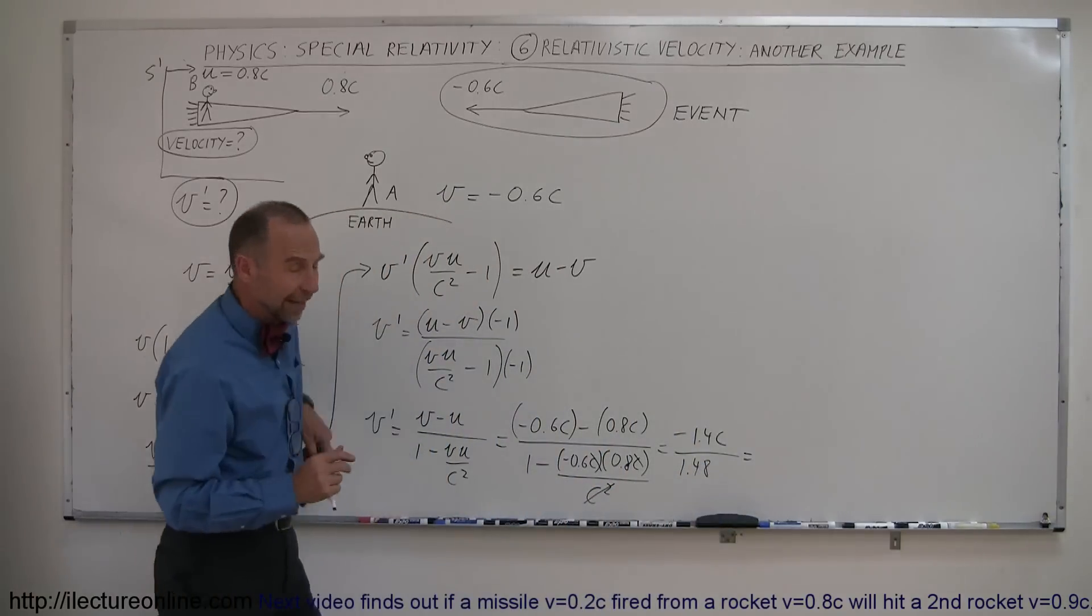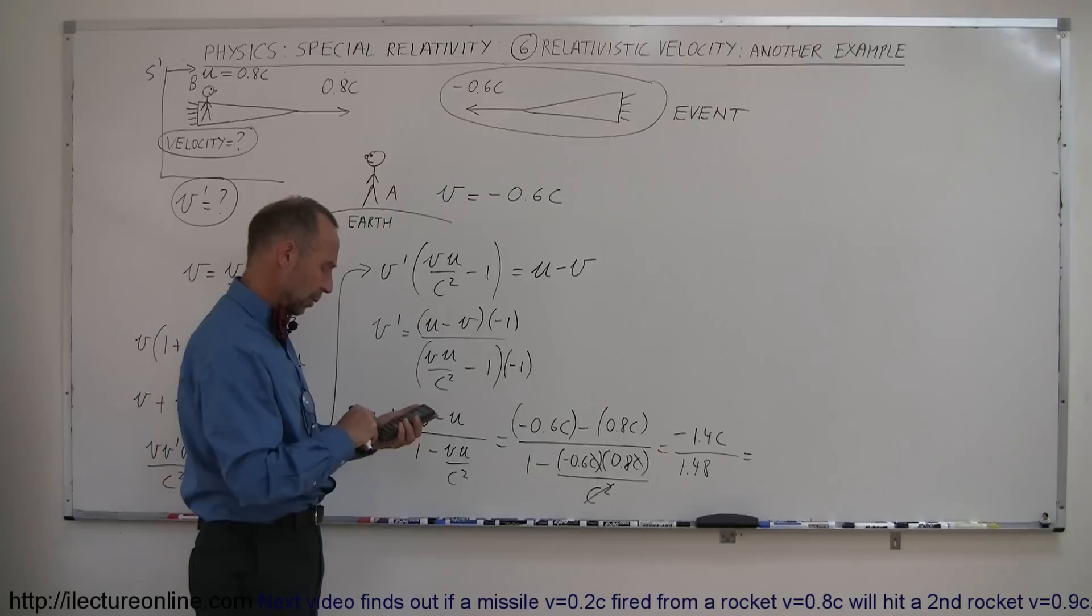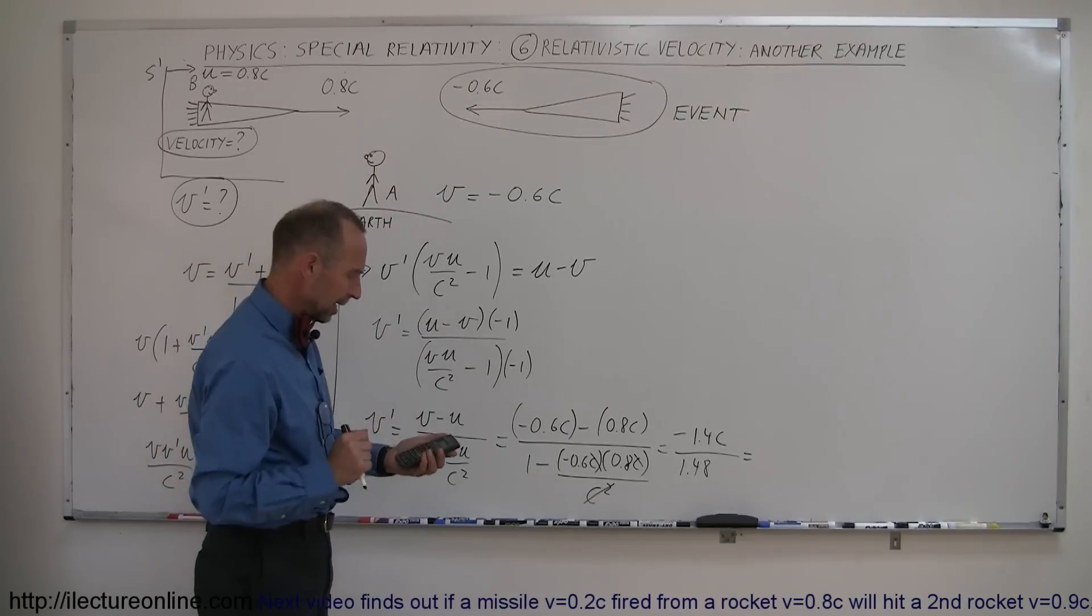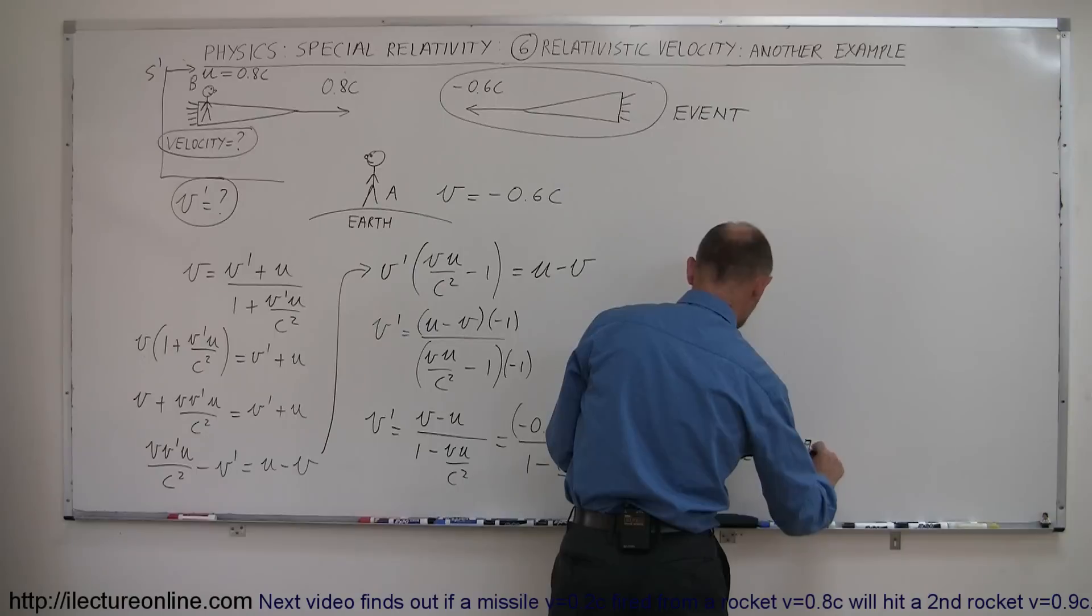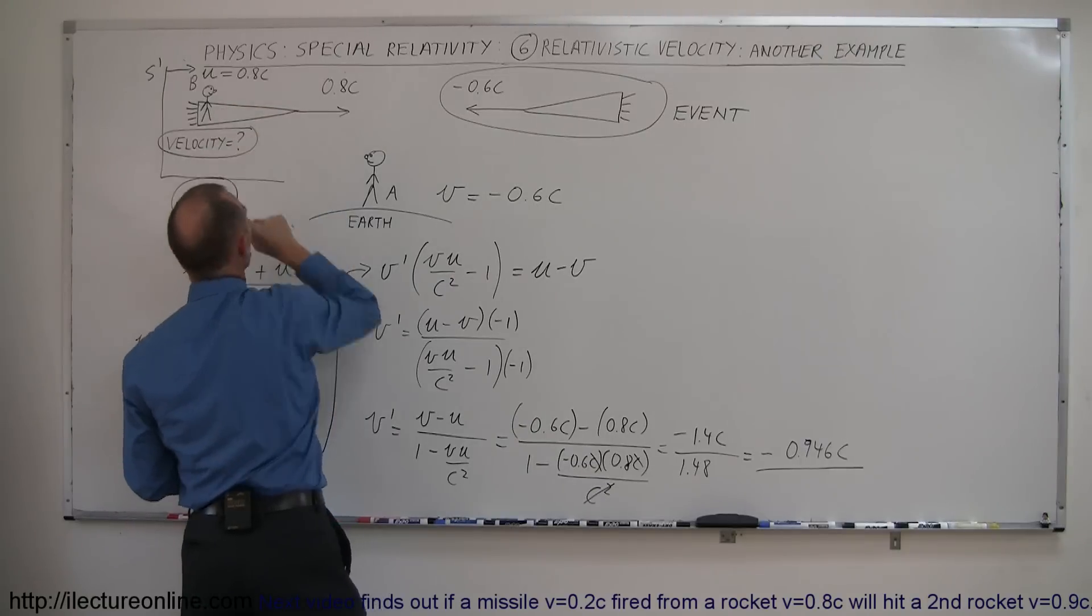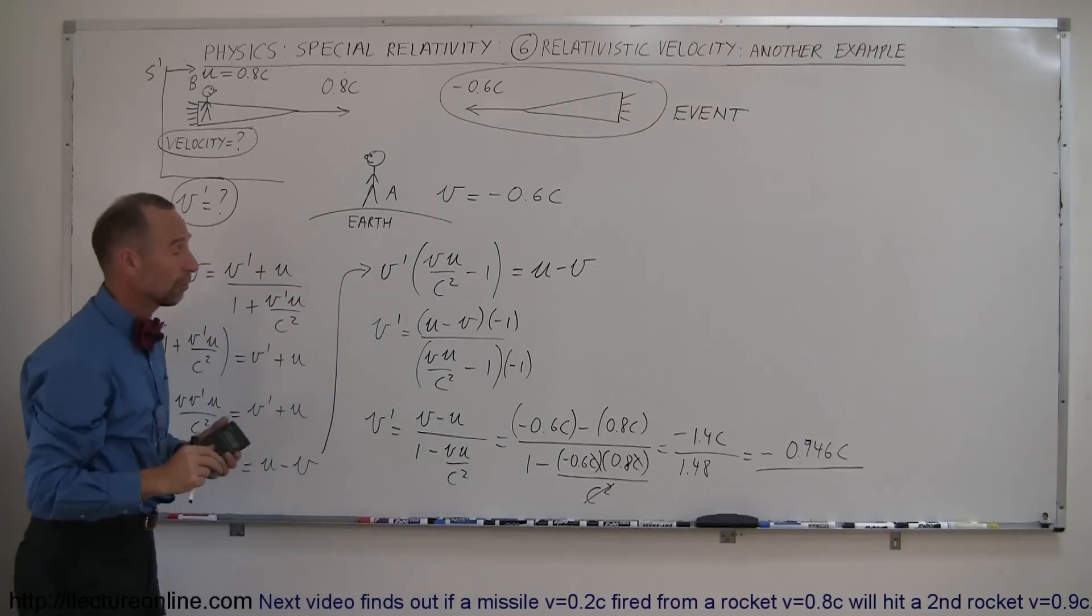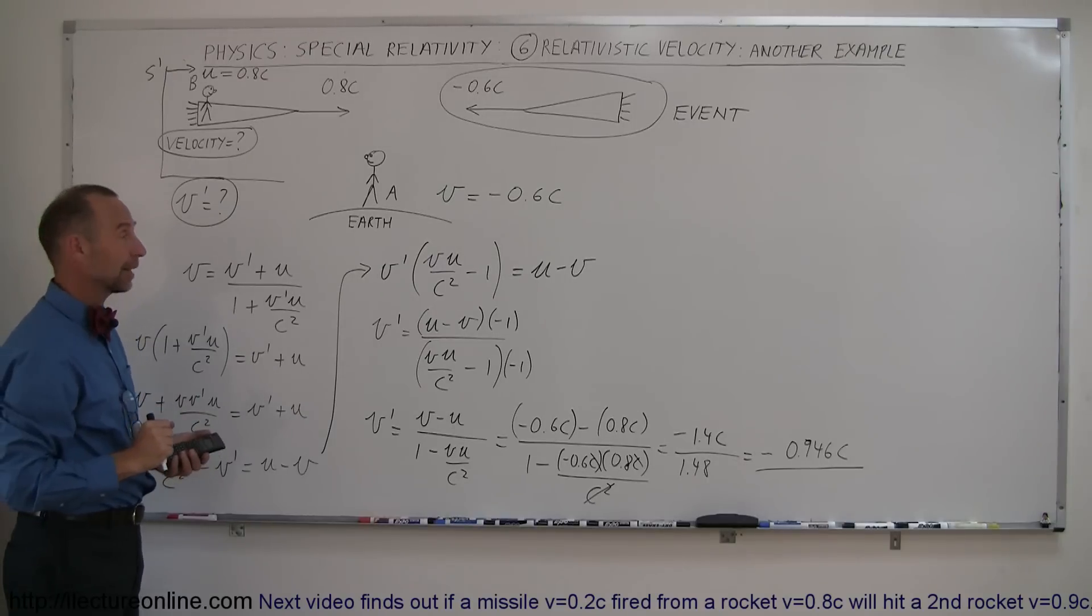And finally, when we take our calculator and divide that, so we have 1.4 divided by 1.48, don't forget the negative, so this is equal to negative 0.946c. And that's how fast this spaceship is moving in relationship to this spaceship, as seen by observer B on the moving reference frame. And that's how you solve a problem like that.